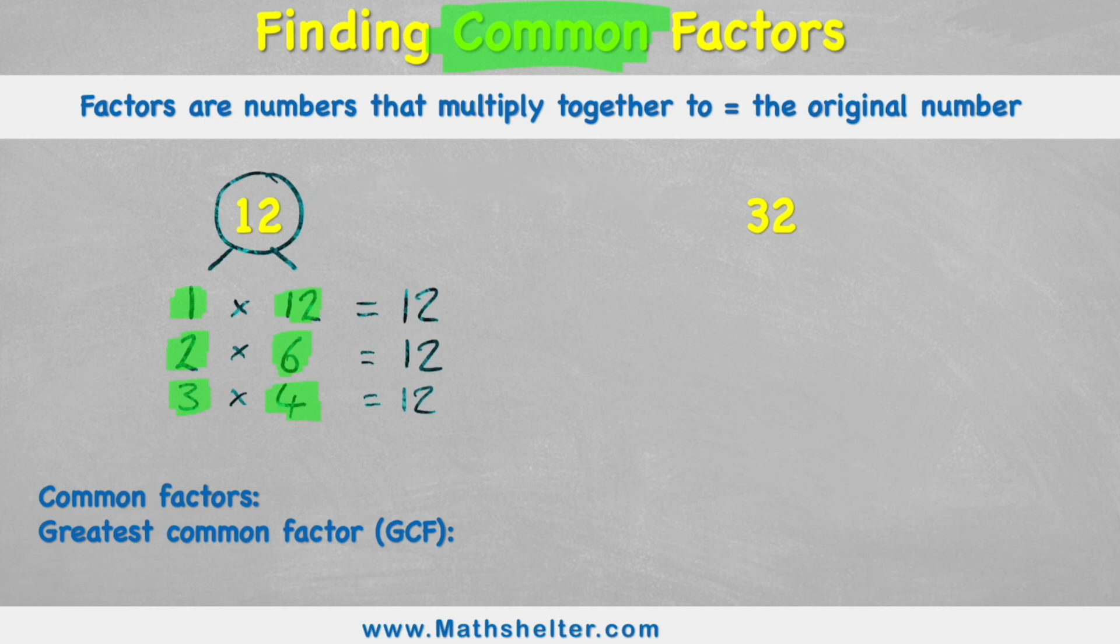Let's do exactly the same steps. I'm going to draw my factor tree and I'm going to start with 1 times 32. 1 times 32 will equal 32. Now I'm going to check the number 2, and 2 can be multiplied by 16 to equal 32.